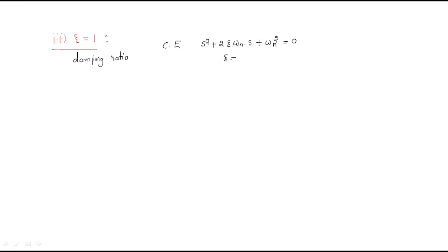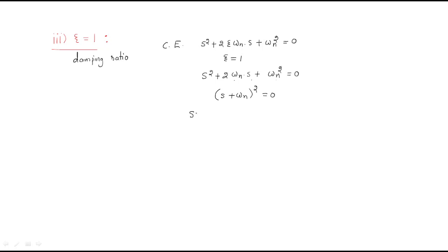Substituting zeta equal to 1 in the characteristic equation gives s² + 2ωₙs + ωₙ² = 0. This equation is of the form a² + 2ab + b², which equals (a + b)², so we can write it as (s + ωₙ)² = 0. This is a second-order system, so we have two poles.